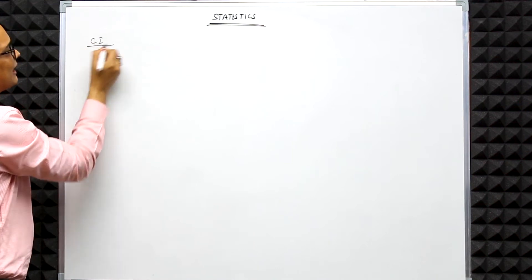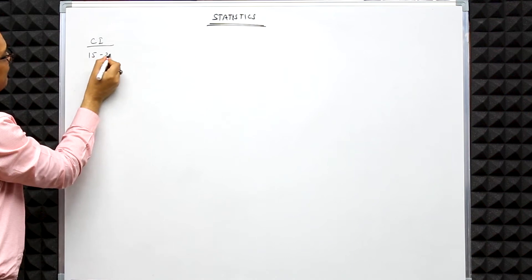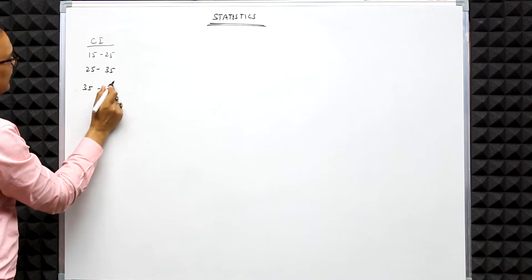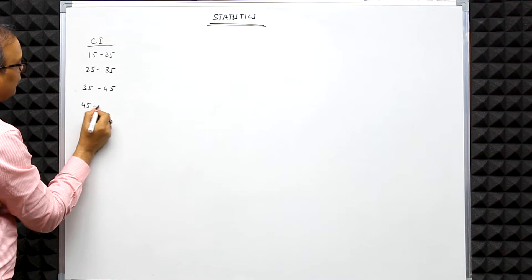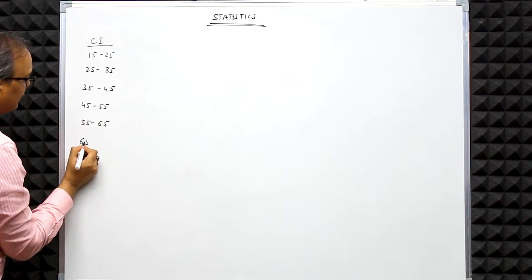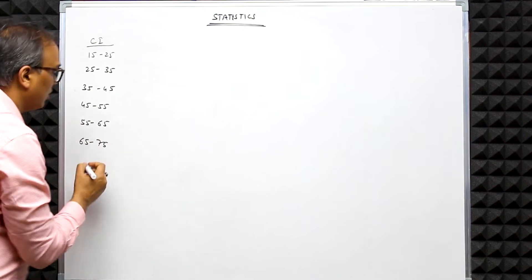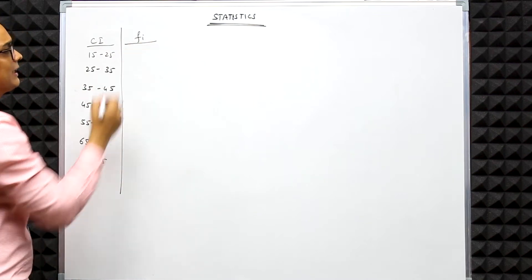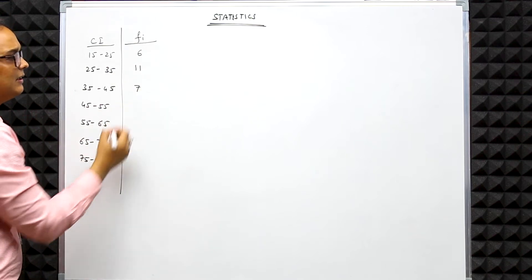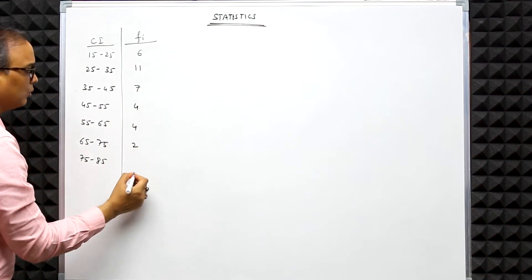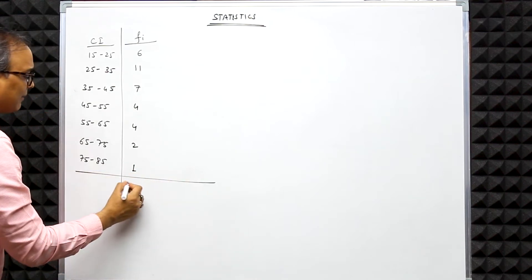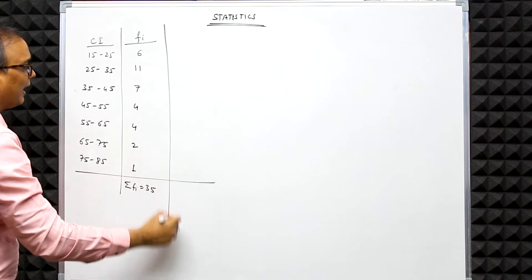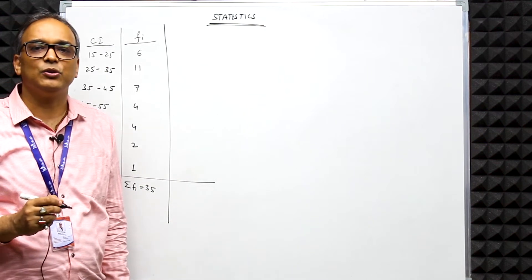Let me take an example. The class intervals are: 15–25, 25–35, 35–45, 45–55, 55–65, 65–75, and 75–85. The frequencies given are 6, 11, 7, 4, 4, 2, and 1. The summation of all frequencies adds up to 35.